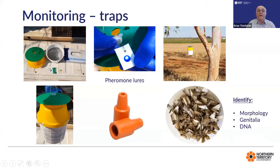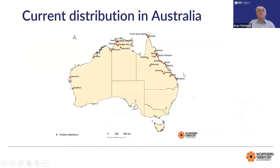Not all the moths we catch are fall armyworm — there will be other very similar moths in the same group. Normally we would be able to identify fall armyworm with some of the markings, but when they're in the trap all the scales go and you can't see the markings. So we dissect the genitalia and we do a backup DNA study.